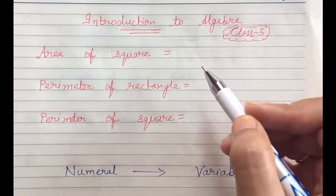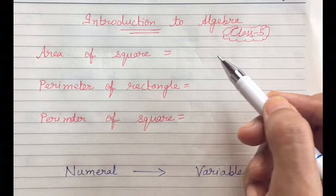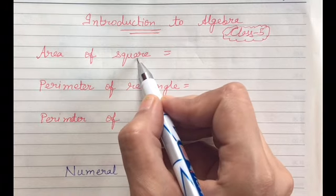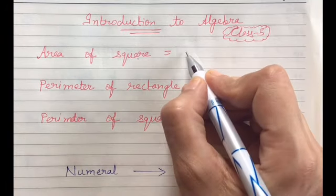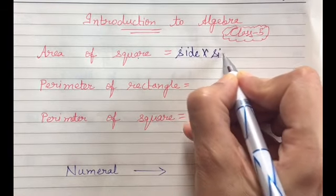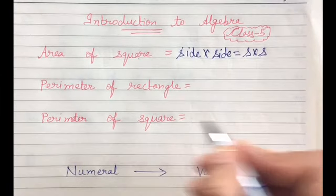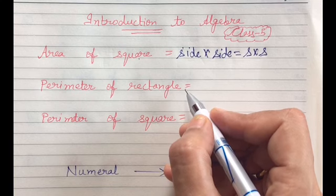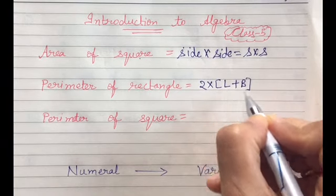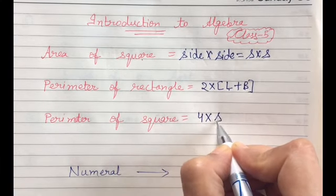You might have learnt about the chapter area and perimeter earlier, if not now in this class, then in the fourth class you might be knowing about this. What is the formula for area of a square? It is side multiplied by side. What is the perimeter of a rectangle? It is 2 into L plus B where L and B are length and breadth. What is the perimeter of square? It is 4 multiplied by S.